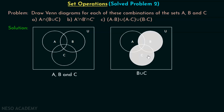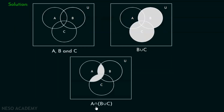Now we can easily draw the Venn diagram for A intersection B union C. We want the common area between A and B union C. As you can see, this area is common between A and B union C — this area as well as this area. This is the Venn diagram for A intersection B union C; this is the common area between A and B union C.